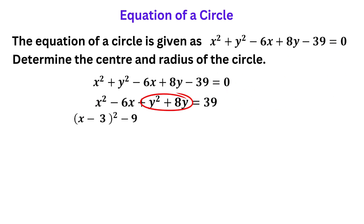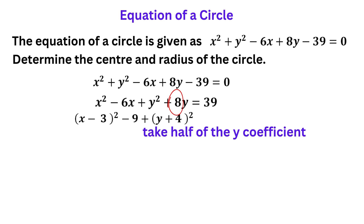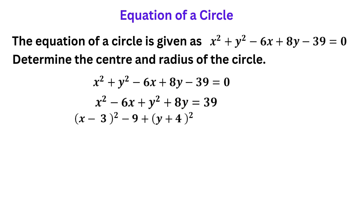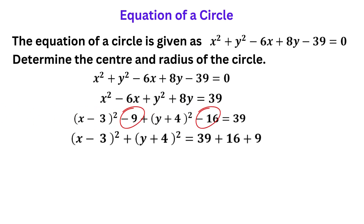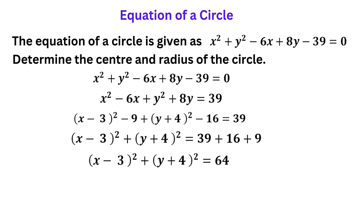Now let's rewrite the terms in Y. Again, we form brackets with a square to the top right. Inside the brackets, put Y, then half of the Y coefficient, which is positive 4. Outside the brackets, we subtract the square of the constant that's inside. The square of 4 is 16, so we subtract 16 to complete the rewriting of the original terms in Y. Next, we group all the constants — 16 and 9 — with 39 on the right, to get 64.